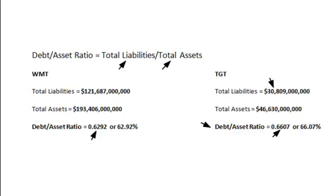If this situation were to go bad — if all of a sudden creditors started calling in their loans — then obviously Target would be in more trouble than Walmart would be. So whenever you're looking for the strength of a company, obviously less debt is better. In this particular case, you can see that Walmart is a stronger company than Target from that perspective.